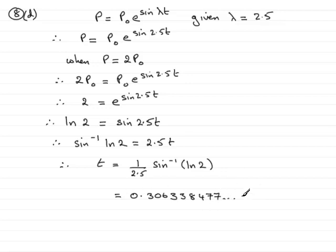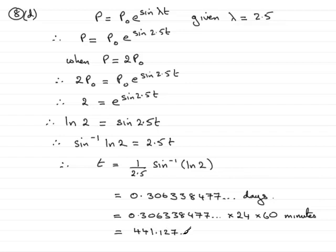Remember that this is the time in days, but we want to give the answer to the nearest minute. So I need to turn these days into minutes, so I take that answer and I've got to multiply it by 24 to turn it into hours and times by 60 to turn it into minutes. So this will be in minutes, and if I work that out, what you find you get is 441.127 and so on minutes.